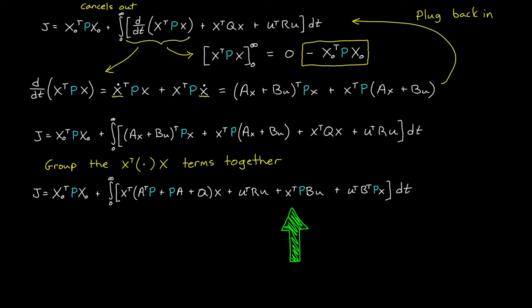Now, as a reminder, we're still trying to find the control U that minimizes this whole cost function. But the part outside of the integral doesn't depend on U, so we don't have control over that. And neither does this first part inside of the integral. So really, we only need to look at what U minimizes this part over here. But unfortunately, it's not just U. It also depends on x and P, making it kind of gross and hard to solve.